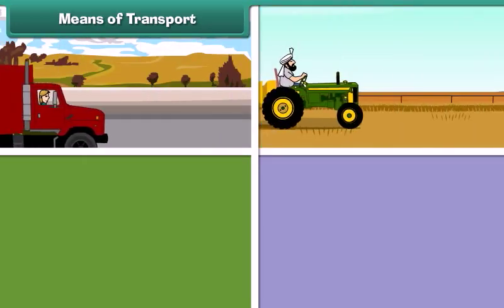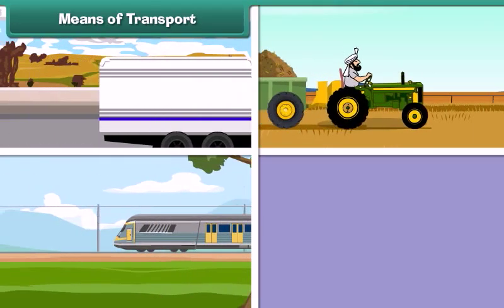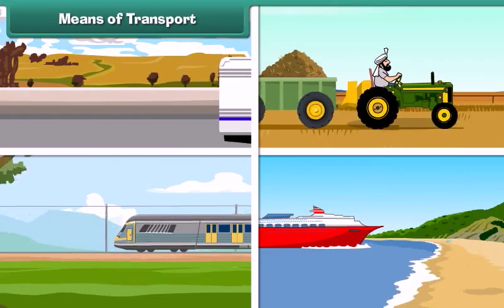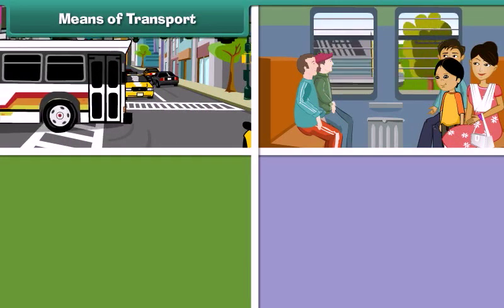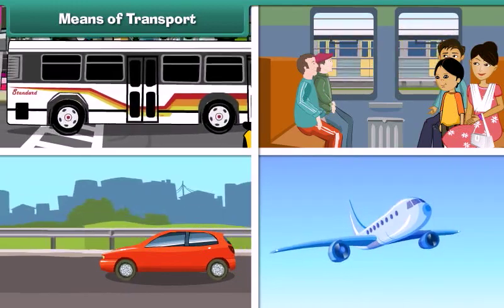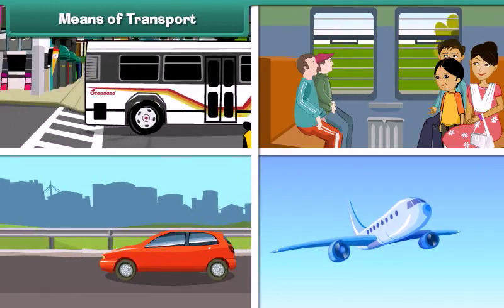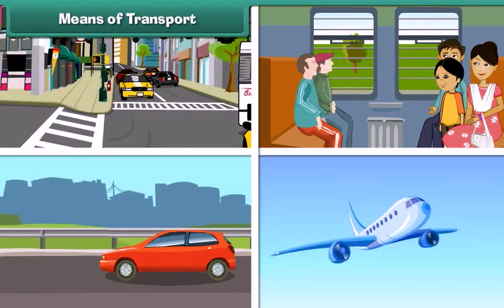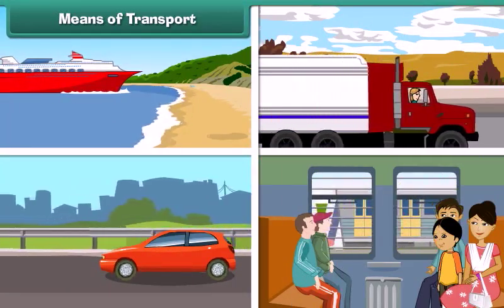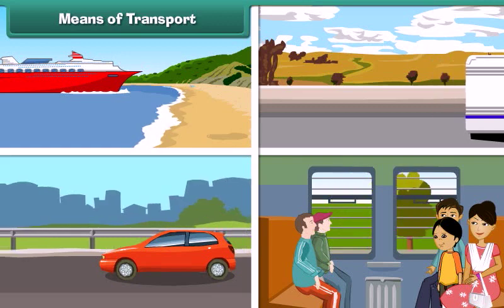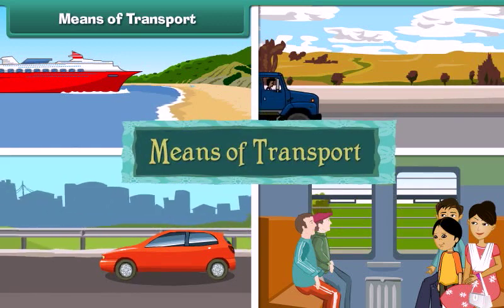We use trucks, tractors, goods trains, ships and cargo planes to carry goods, and buses, trains, cars and airplanes to carry passengers from one place to another. These are known as the means of transport.